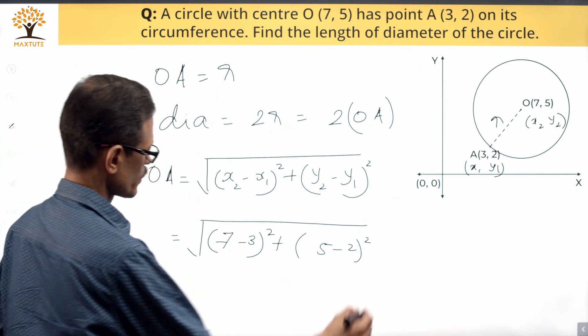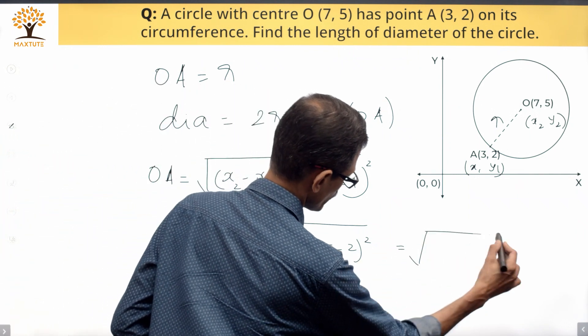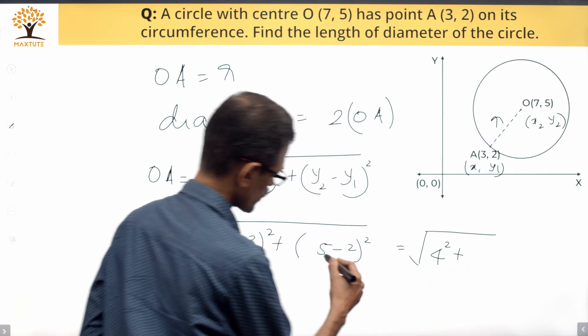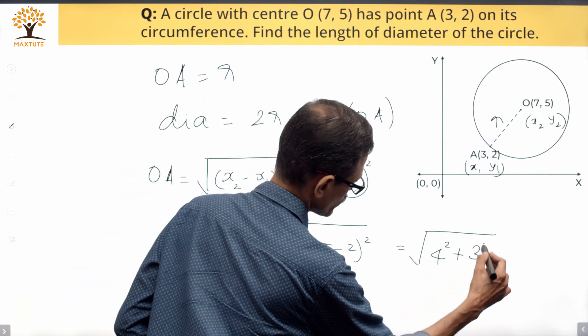7 minus 3 equals 4. So this is 4 squared. 5 minus 2 is 3, and therefore that is 3 squared.